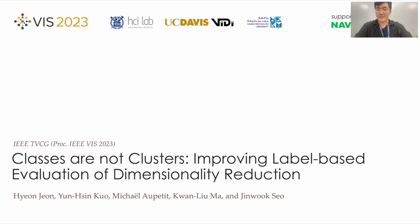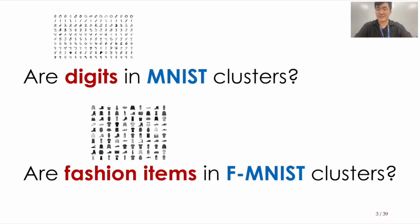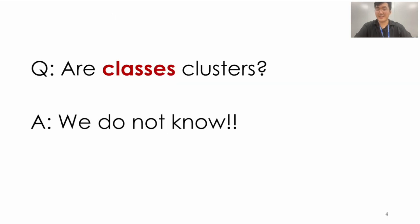Before we dive in, let me pose a question. Are classes necessarily clusters? Specifically, when looking at the MNIST dataset of handwritten digits or the Fashion MNIST of fashion items, does each digit or fashion category form a distinct, well-separated cluster? The truth is, we can't say for certain.